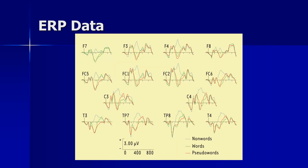Here's an example of ERP data comparing someone looking at non-words, words, and pseudo-words. You can see brainwave patterns are pretty similar for words and non-words early on, but differences emerge later. Non-words are completely different almost from the start, showing a different pattern of perception right away. The electrode labels — F7, F3, F4, F8 — simply indicate where on the scalp the electrode is located: frontal, central, and temporal positions, with Cs generally running down the center line.